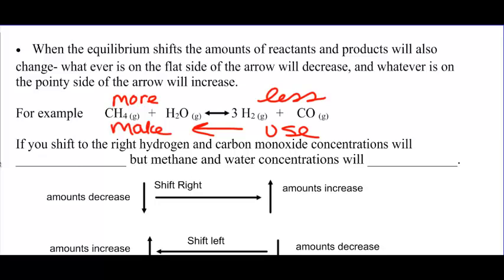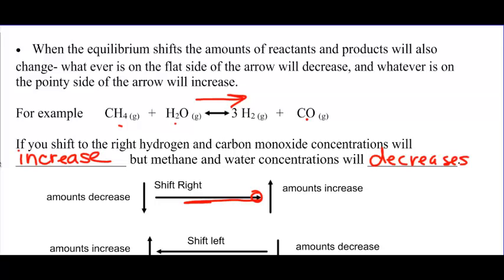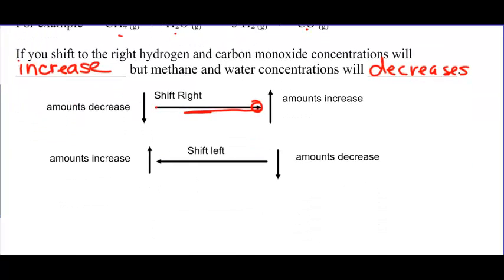Once you know the shift, you know the result of that shift. If you shift to the right, the hydrogen and carbon monoxide concentrations will increase, but the methane and water concentrations will decrease. Whatever's on the pointy side of the arrow goes up; whatever's on the flat side of the arrow goes down. This applies whether you shift left or right. So there will be a stress, the equilibrium will shift one way or the other, and you will change the concentrations of everybody in solution.